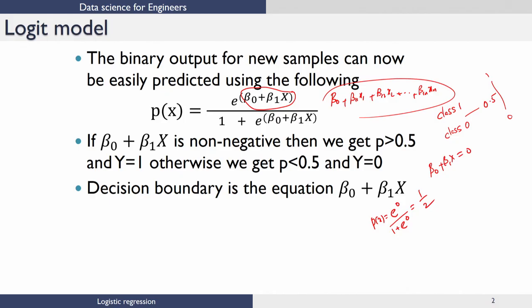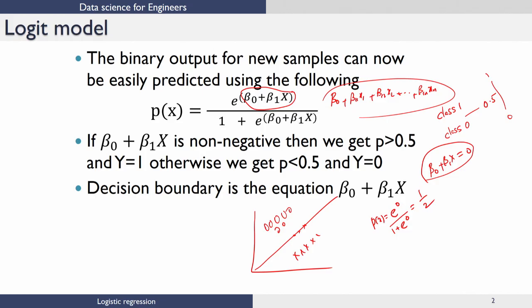Notice that this equation is the equation of the hyperplane. If I had data like this and I draw this line, any point on this line has probability equal to 0.5. That basically says that any point on this line — in this 2D case — or on the hyperplane in the n-dimensional case, will have equal probability of belonging to either class 0 or class 1, which makes sense from what we are trying to do.